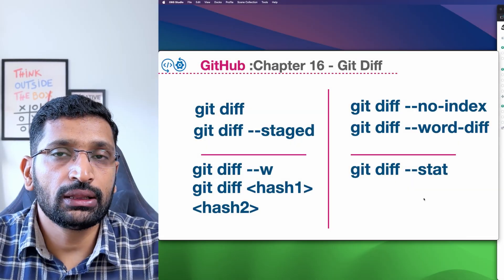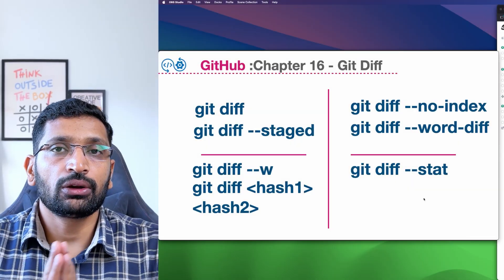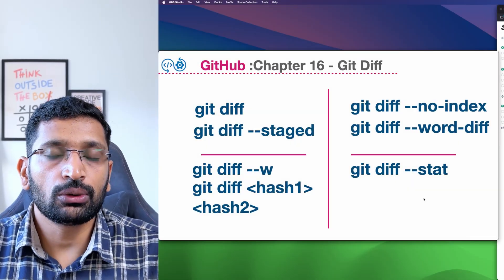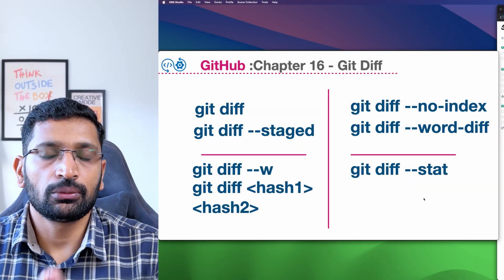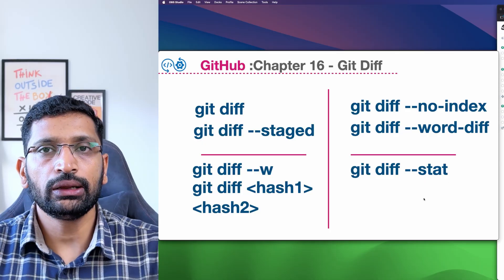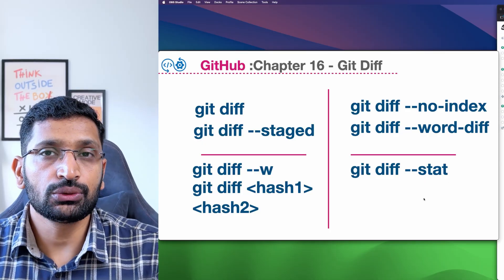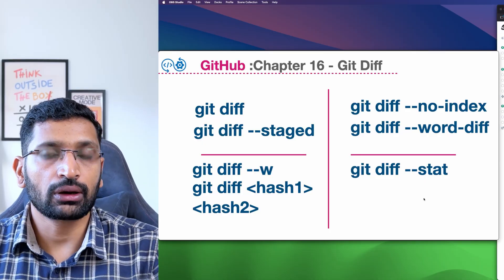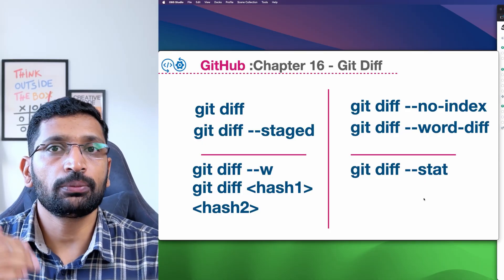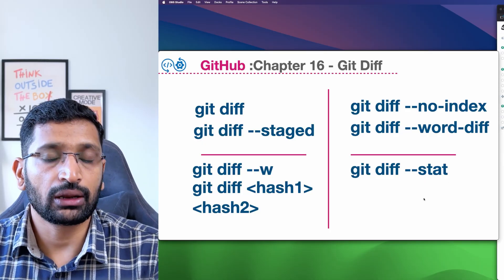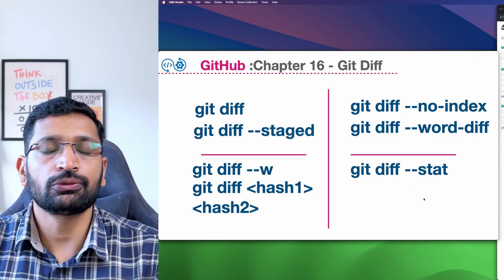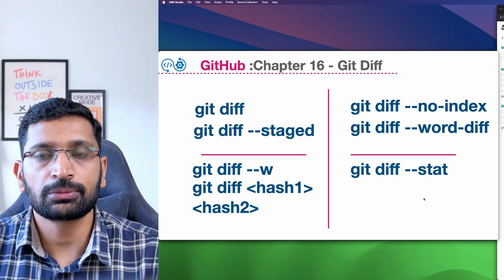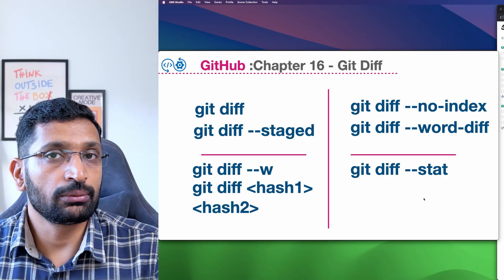Moving to the next chapter, we are going to take a look at the git diff command. The git diff command is used to find the difference between your current commit and your previous commit, and also this command can be used to find the difference between your historical git commit history.